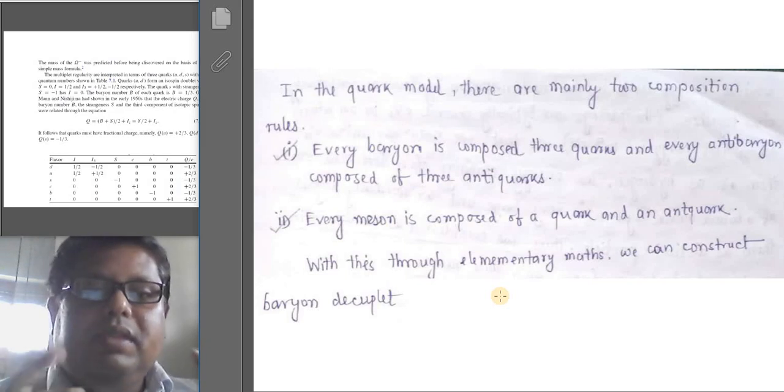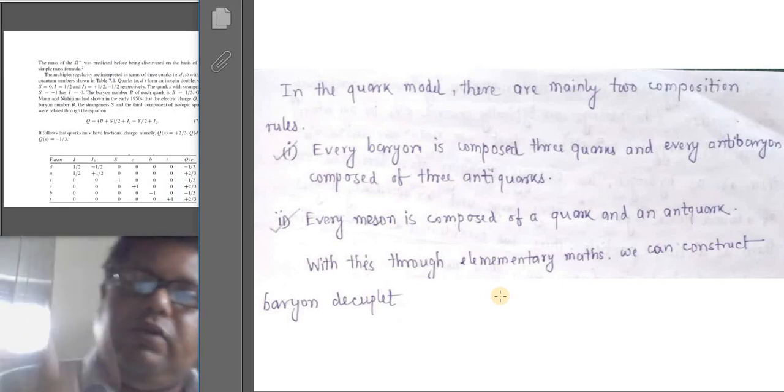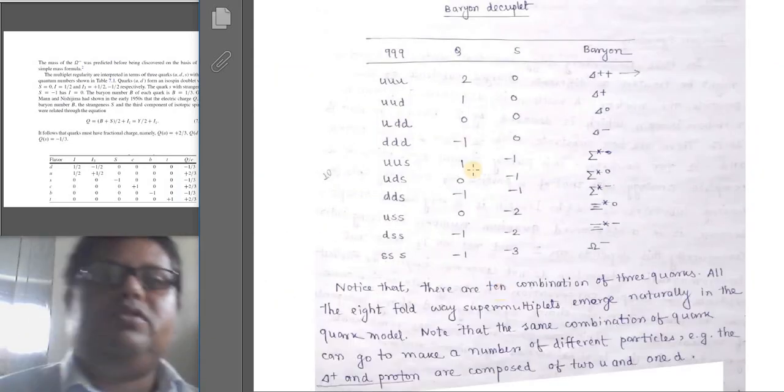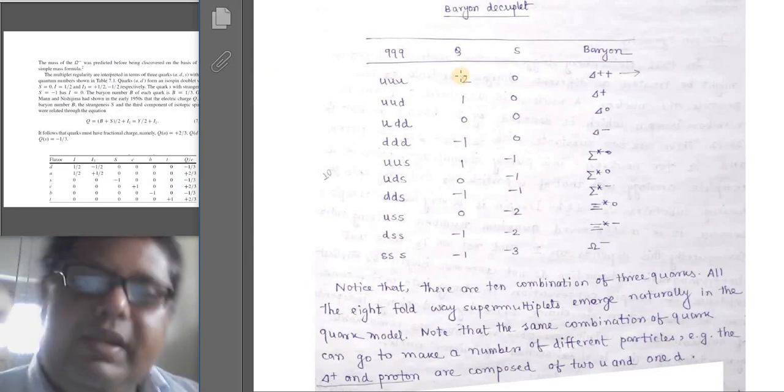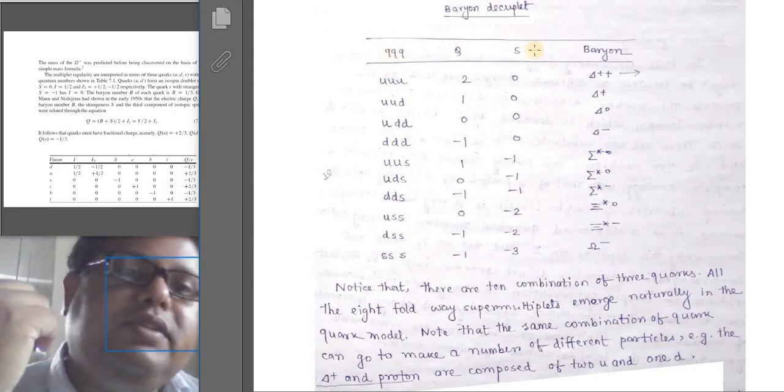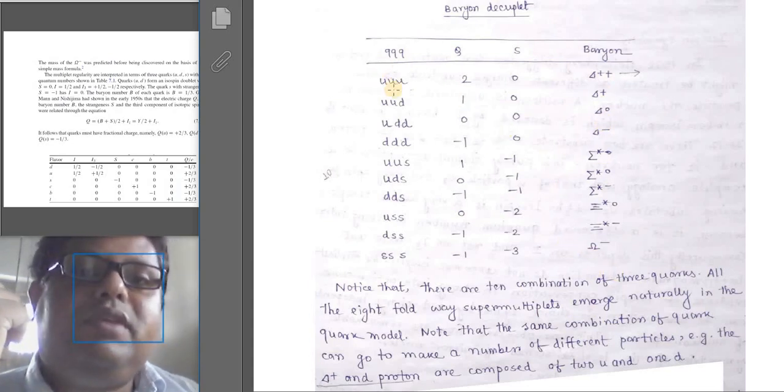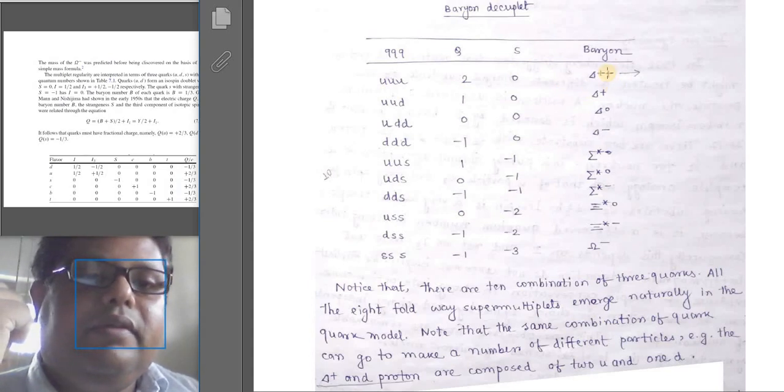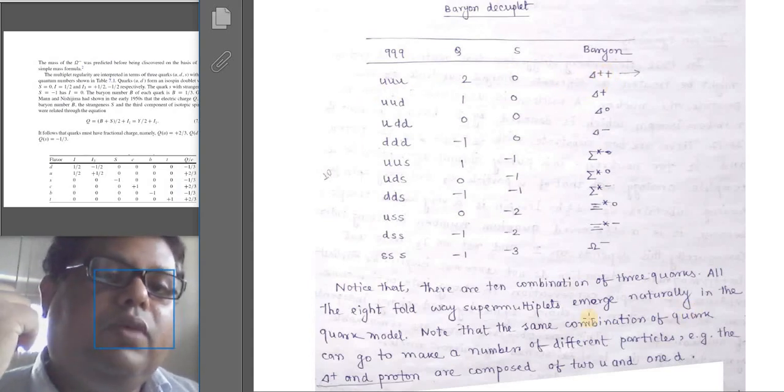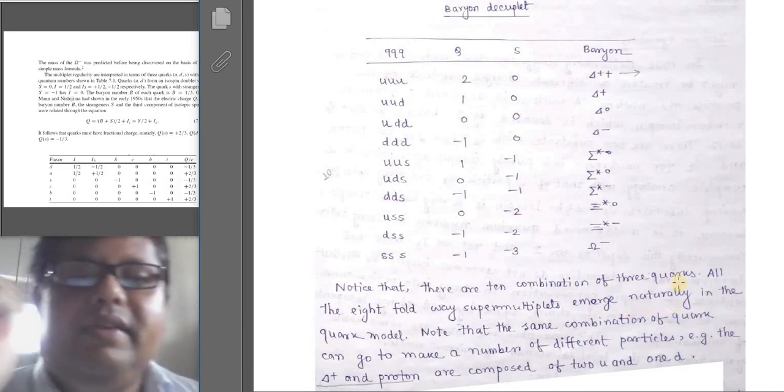With this elementary mathematics, let us try to construct the baryon decuplet. Here I have shown you the baryon decuplet with the quark constituent QQQ, the total charge, the strangeness, and the experimental baryon which we have observed. Interestingly, there are ten combinations of three quarks and we are able to reproduce them. All the Eightfold pattern with supermultiplets emerge naturally in this quark model.